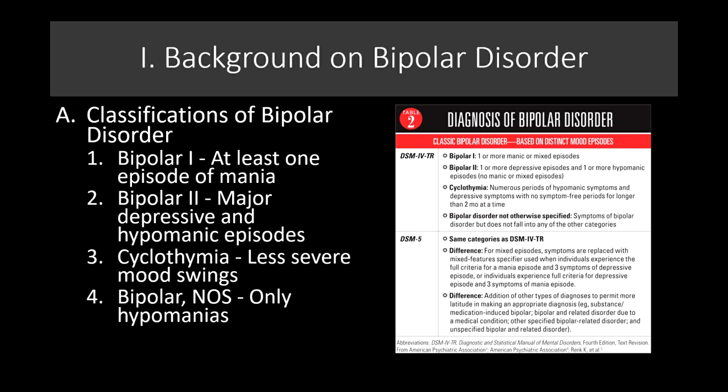Looking at the DSM-4 versus DSM-5: in DSM-4, Bipolar 1 requires one or more manic or mixed episodes. Bipolar 2 requires one or more depressive episodes and one or more hypomanic episodes. Cyclothymia involves numerous periods of hypomanic symptoms and depressive symptoms with no symptom-free periods longer than two months. NOS doesn't fall into other categories. In DSM-5, mixed episodes are replaced with mixed feature specifiers — the DSM-5 is available online if you're interested.